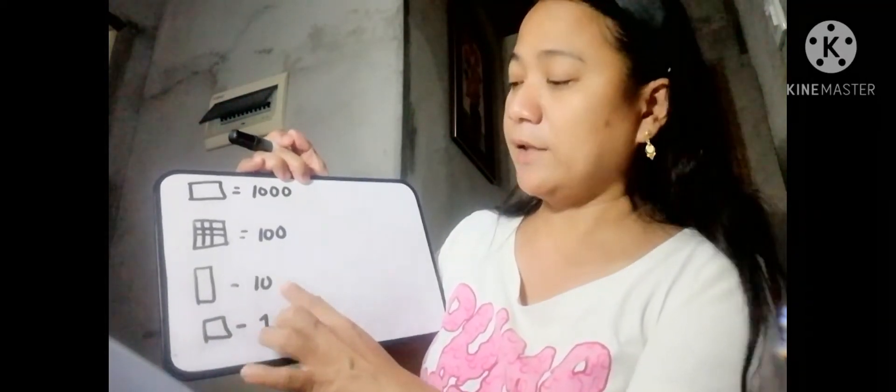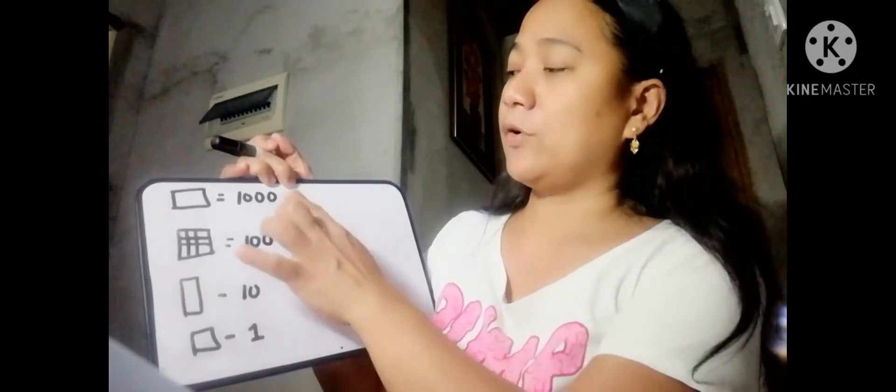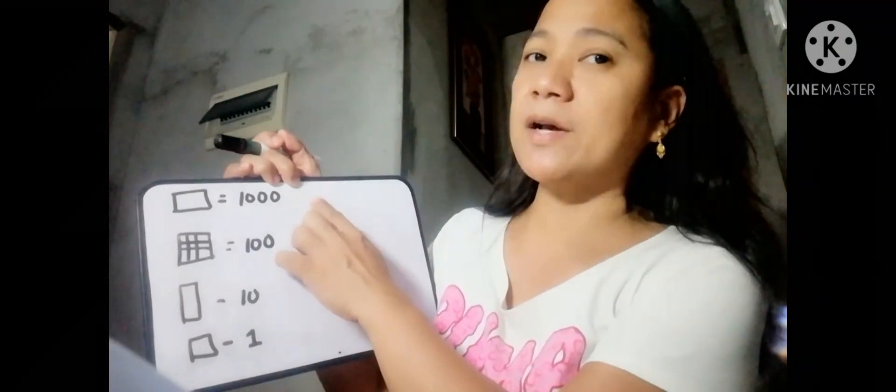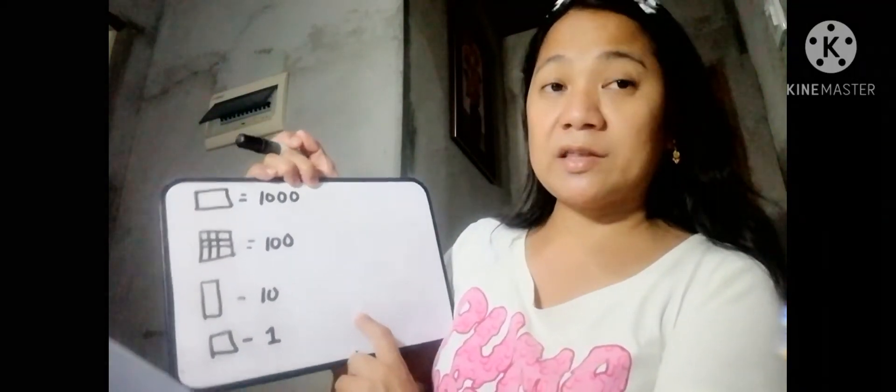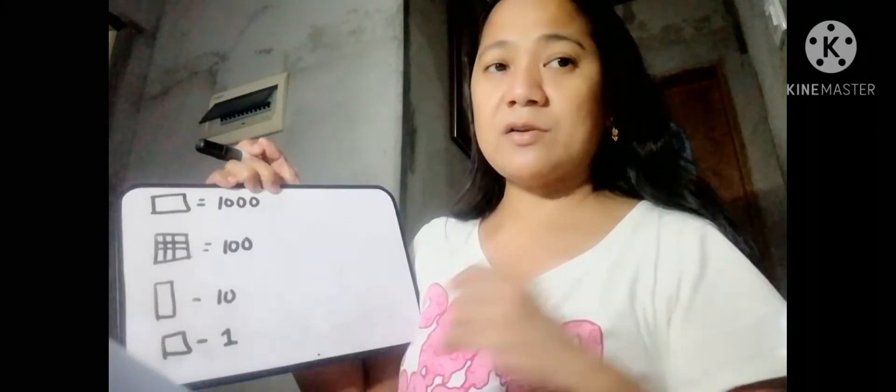If you are going to answer the additional activities on the last two pages of the Power Modules, you must take note of this. For every 1 block, it is equivalent to 1,000. For every 1 flat, it is equivalent to 100. For every piece of long, it is equivalent to 10. And for every square, it is equivalent to 1. So for example, if we have 3 blocks, it is equivalent to 3,000. You must take note of this to answer the additional activities on the last two pages.